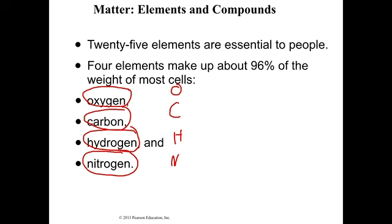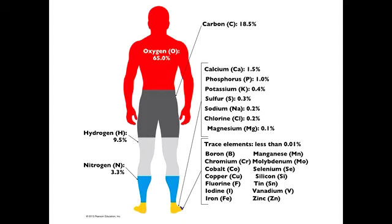Nitrogen is certainly the least abundant of the big four. Looking at a distribution of these elements within your body: about 65% of your body is oxygen — most of that is water, but a lot is also in the non-water portion. About 18.5% would be carbon, 9.5% would be hydrogen, and 3.3% would be nitrogen. Right there, that's most of your body.